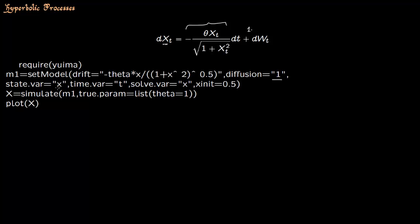The state variable is x, time variable is t. You are going to solve for x. The initial value of x is 0.5, and theta is a constant so you have to give it a value.